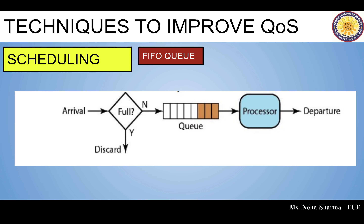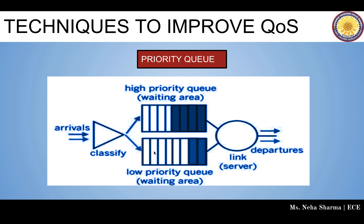The first scheduling technique is FIFO queue — First In First Out. If the queue is full, the new incoming packet is discarded. If it is not full, the packet is sent to the processor and then forwarded to the next node, which can be a switch or router. If the arrival rate is more than the processing rate, new packets have to be discarded.